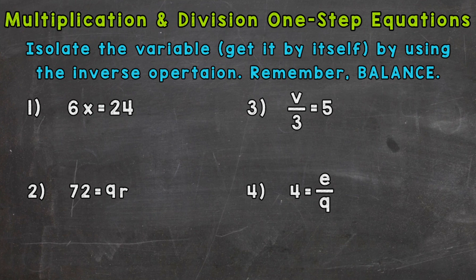We'll jump right into number one where we have 6x equals 24. So we need to isolate that variable of x. Now, whenever we have a number right next to our variable, so the 6 right next to the x, that means to multiply. This problem means 6 times x equals 24. So if we're multiplying by 6, the inverse or opposite operation would be to divide by 6. So let's divide the left side by 6 in order to isolate the x, because these 6s are going to cancel out. Six divided by 6 there gives us one x, which we can just write x there and we have it isolated.